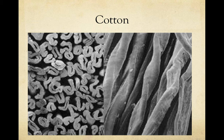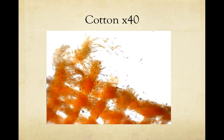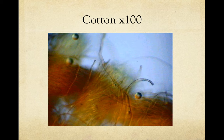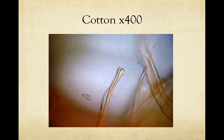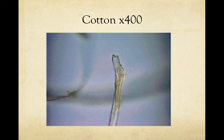Here is cotton again under SEM, and also under general microscopic imagery with increasing magnification. You can start to see some of the twisting. Notice that no two cotton strands look quite alike, even though they share a similar form.